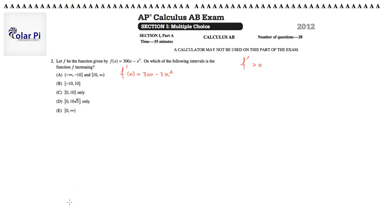Great. So setting this equal to zero means setting 300 equal to 3x squared. Setting f prime equal to zero is the same thing as this statement here. Dividing by three,